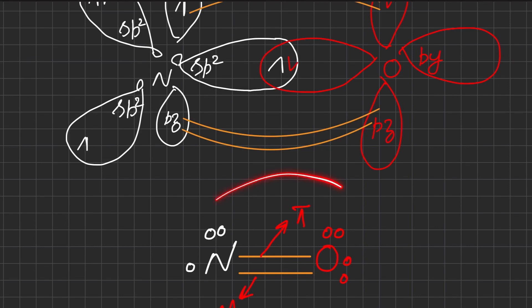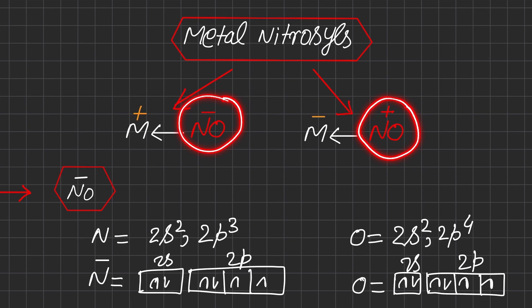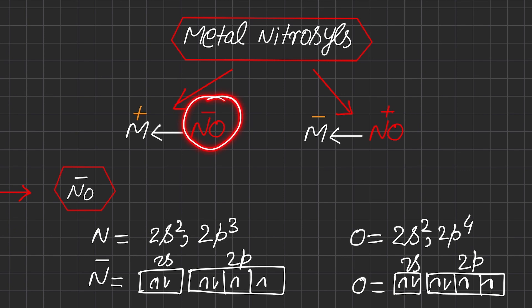This gives the overall geometry and shape of the NO molecule with sp2 hybridization on nitrogen. Just like metal carbonyls, metal nitrosyls are also mostly neutral species. However, NO does not exist as a neutral species in metal nitrosyls — it actually exists in two forms: either as NO⁻ (nitrosyl anion) or as NO⁺ (nitrosyl cation).